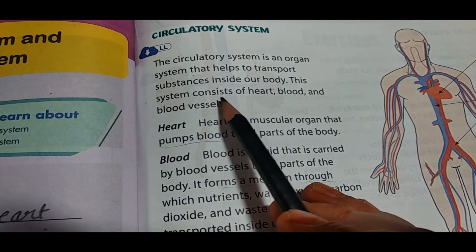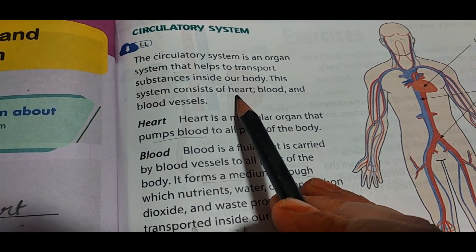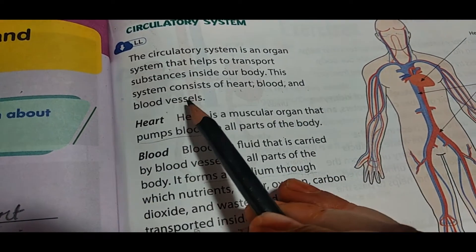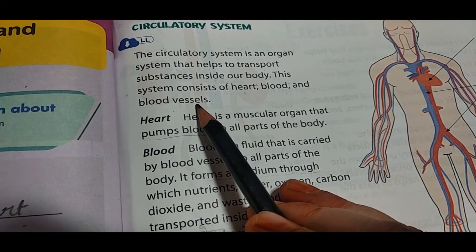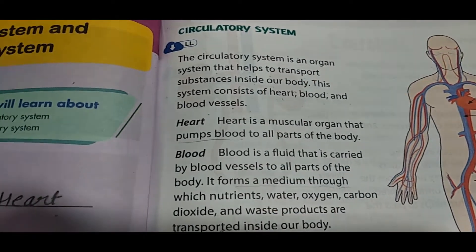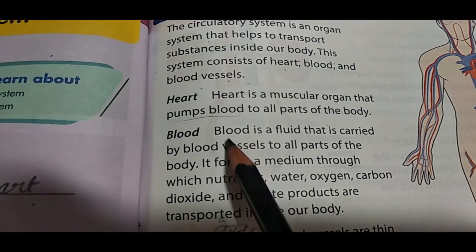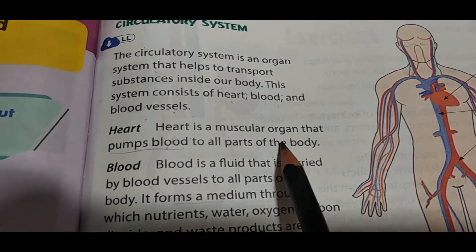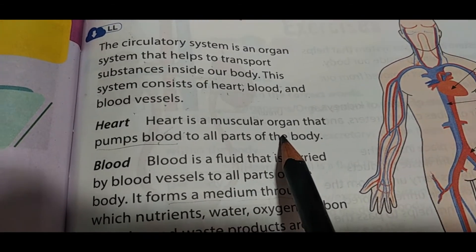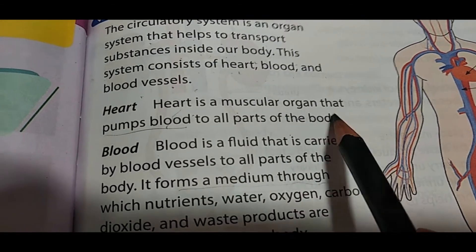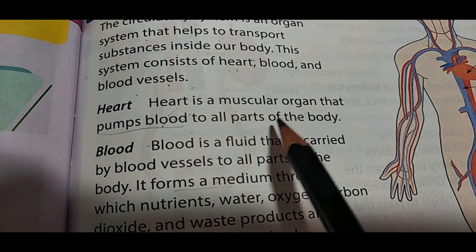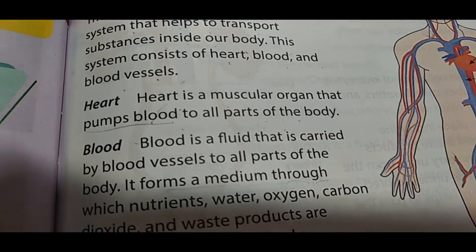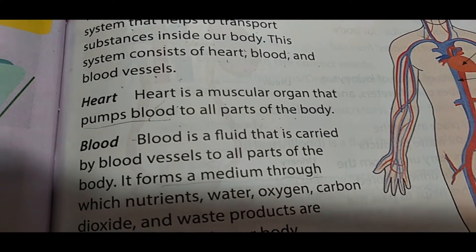This system consists of the heart, blood, and blood vessels. The heart is a muscular organ which pumps blood to all parts of the body.